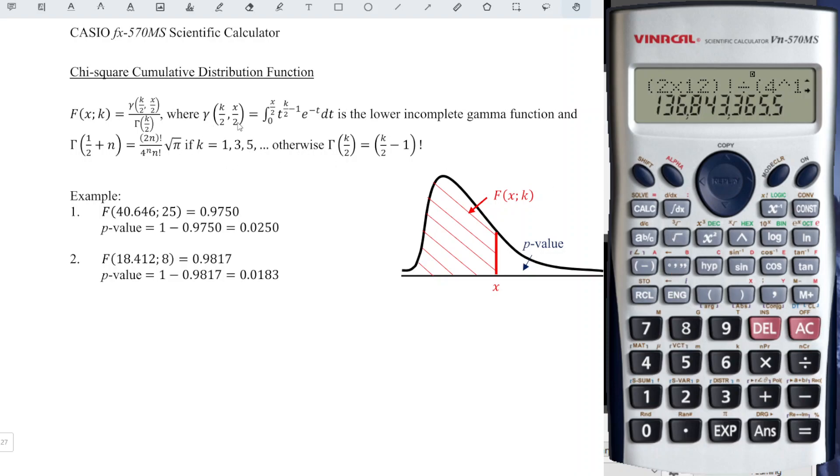So we already store the value in a and b respectively for the numerator and denominator. So to obtain the cumulative probability distribution, we just have to simply take a divided by b. And we will obtain the value. For this case, it's being rounded to the nearest four decimal places.